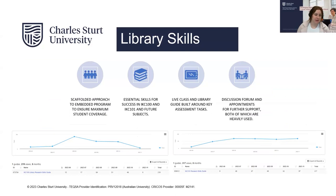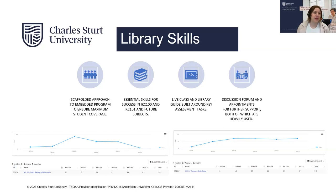The library has implemented an embedded program that spans across all faculties and aims to target key subjects in various disciplines and courses. By placing an embedded librarian in these subjects, students are equipped with essential skills at the beginning of their course, setting them up for future success. The core units of IKC 100 and IKC 101 are required for most courses, so having an embedded librarian in these subjects allows us to teach a large number of students and provide instruction on information literacy and effective utilisation of the library. The skills are developed over time, and as assessment requirements become more complex, students can continue to build upon the essential skills covered in this IKC 100 and 101 instruction.